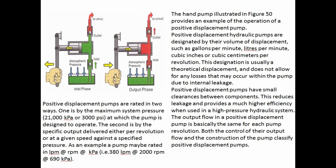Positive displacement pumps have small clearances between components, which reduces leakage and provides much higher efficiency when used in a high pressure hydraulic system. The output flow in a positive displacement pump is basically the same for each pump revolution. Positive displacement pumps are classified both by the control of their output flow and the construction of the pump.